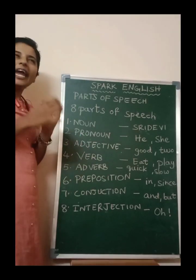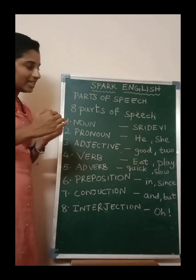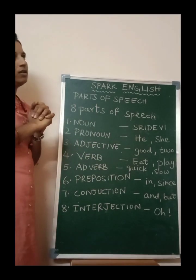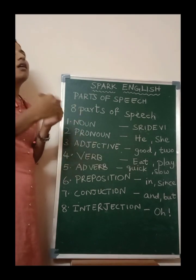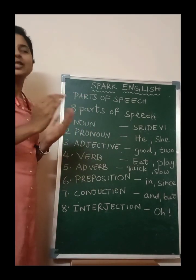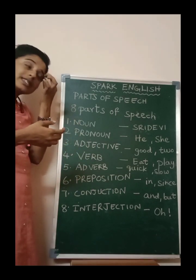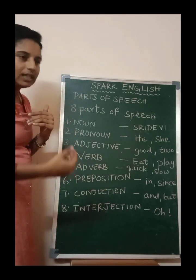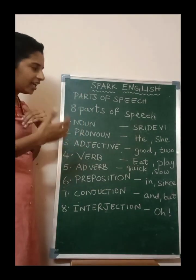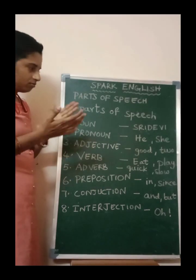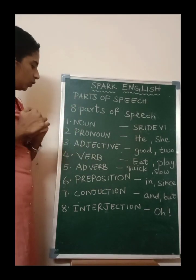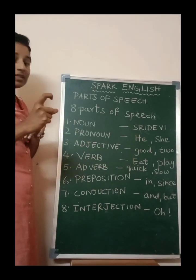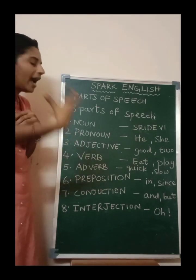And pronoun — any word used instead of a noun, to represent a noun, is a pronoun. For example, Ramu is a noun: 'Ramu is a good boy.' Instead of Ramu, we can also say 'He is a good boy.' He — that kind of word is a pronoun.